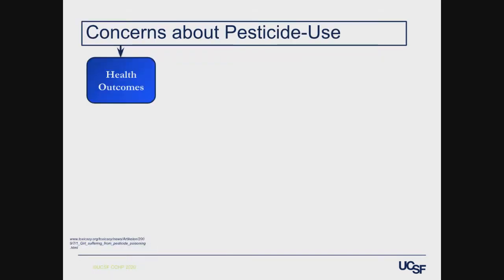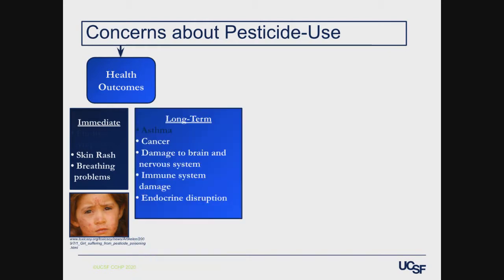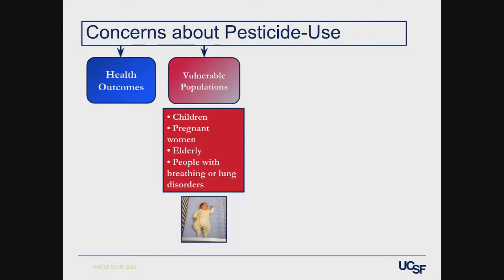Why are we concerned about pesticide use? It's really about health. We know that health outcomes related to pesticides include short-term acute effects and long-term effects. Short-term ones we've studied include skin rashes and breathing problems. Long-term problems include chronic conditions like asthma, cancer, damage to the brain and nervous system, immune system damage, and endocrine disruption. The vulnerable populations we're most worried about are children, pregnant women, the elderly, and people with breathing or lung disorders.